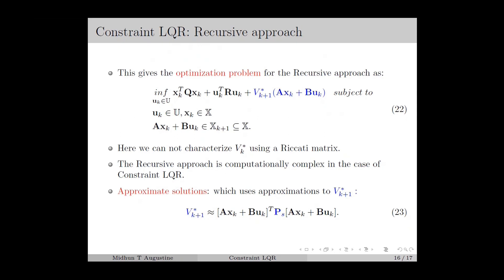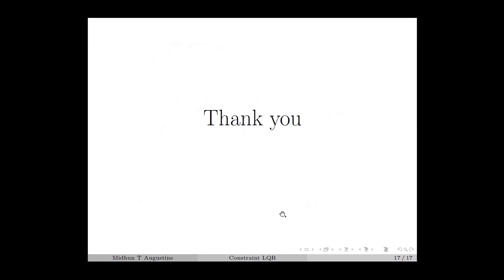However, the batch approach results in open-loop optimal control solutions since the optimal control input sequence u* only depends on the initial state x0. Moreover, the size of the decision vector increases with the time horizon, making the batch approach computationally intractable for large time horizon and infinite horizon problems. In that case, we can use the receding horizon implementation of the control law, which leads to model predictive control (MPC) that gives closed-loop optimal control solutions. In the next lecture, we compare the constrained LQR and MPC with some numerical examples. That completes this lecture.